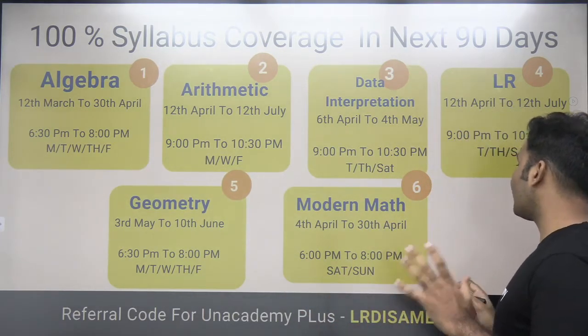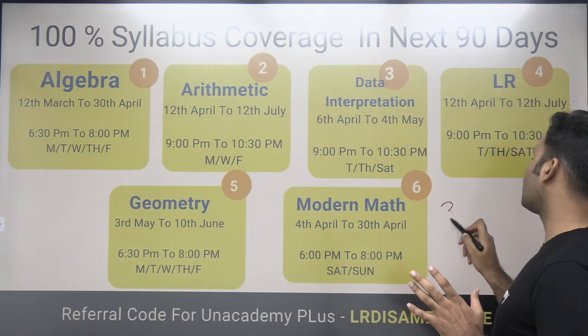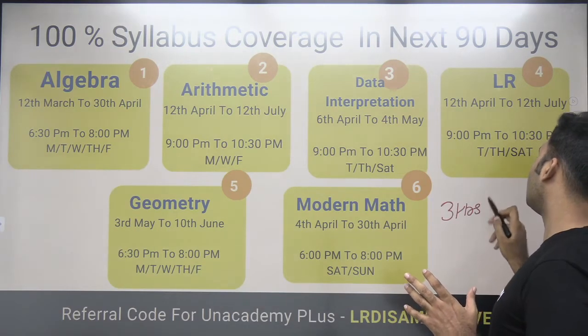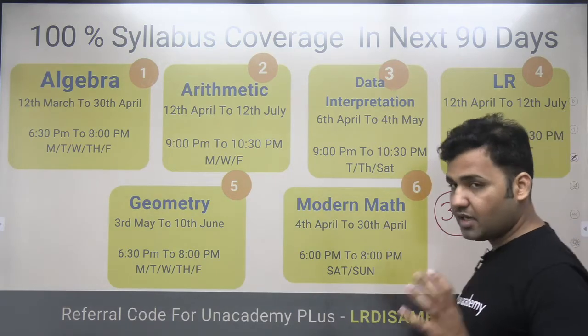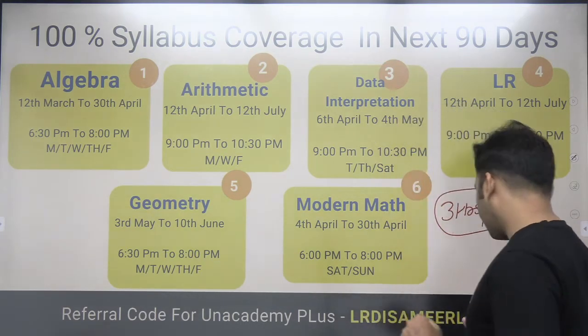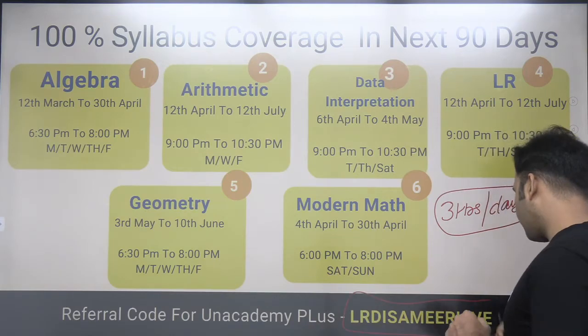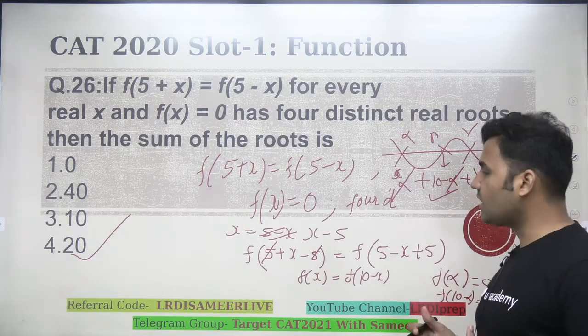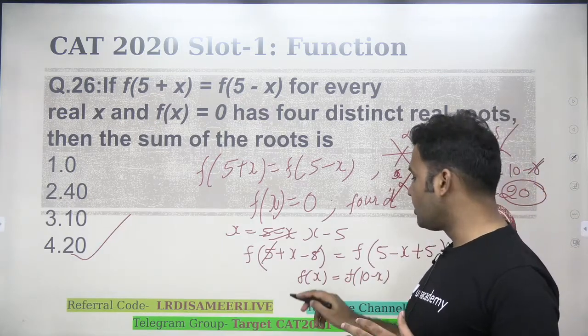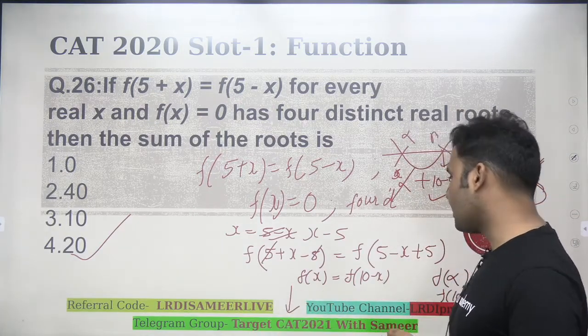You just need to attend two sessions, three hours of classes every day. Three hours of classes per day in the next 90 days. And your whole Quant, Data, LR will be covered. This is my referral code, LRDS Meer Live that you can use to get 10% off. Also, to attend my free sessions happening on Unacademy Plus, join my Telegram group, Target CAT 2021 with Samir.